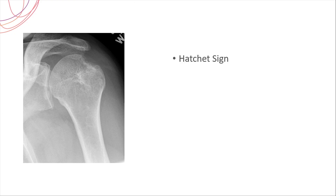Another important finding in the shoulder is called the hatchet sign. Because of rotator cuff muscle attachments, the shoulder is a potential area for enthesopathy or enthesitis, leading to bony erosion at the muscle attachments. This erosion resembles the corner of a hatchet weapon, which is why it is named the hatchet sign.